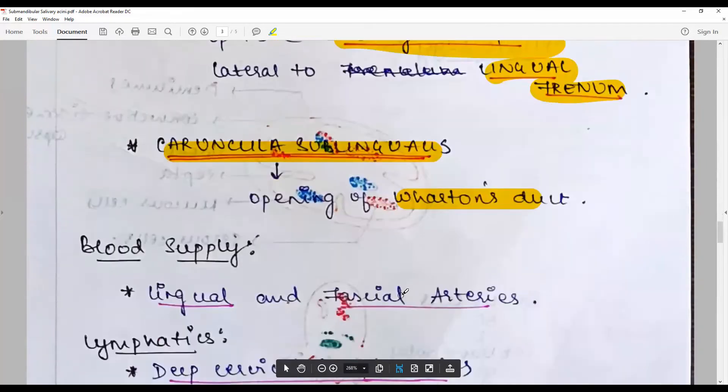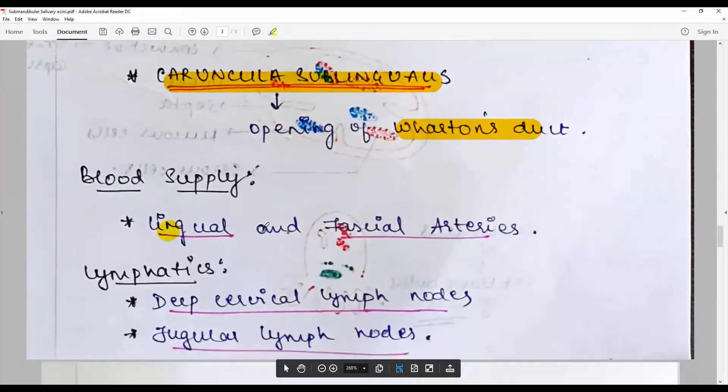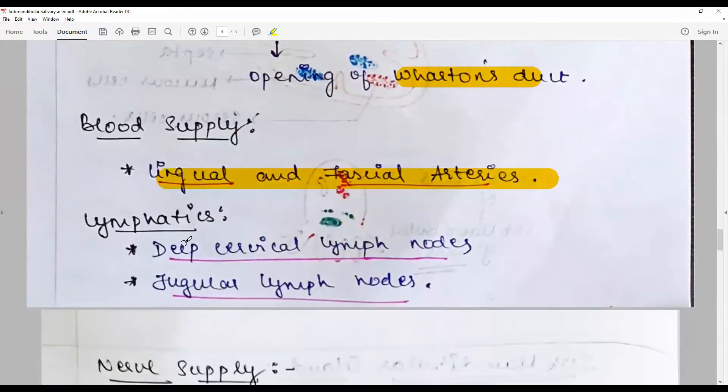The blood supply is via the lingual and the facial arteries. Lymphatics is the deep cervical and the jugular group of nodes.